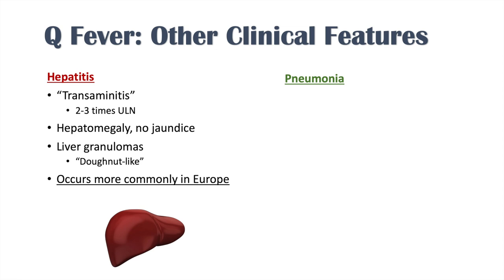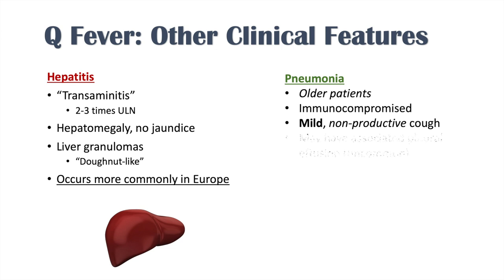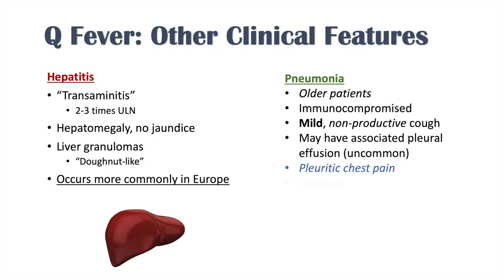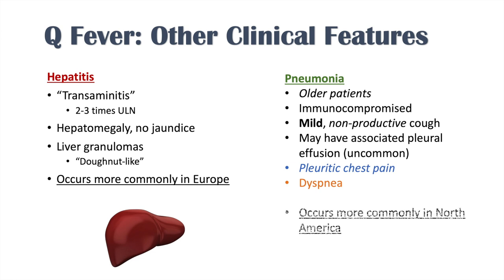Another clinical presentation is pneumonia, which typically occurs in older patients who are immunocompromised. They get a mild nonproductive cough, may have associated pleural effusion (though this is uncommon), and have pleuritic chest pain — pain when taking a deep breath — and dyspnea, or shortness of breath. This presentation occurs more commonly in North America.